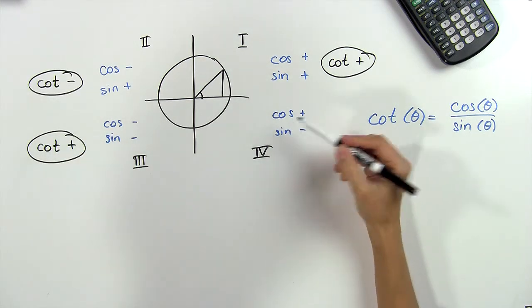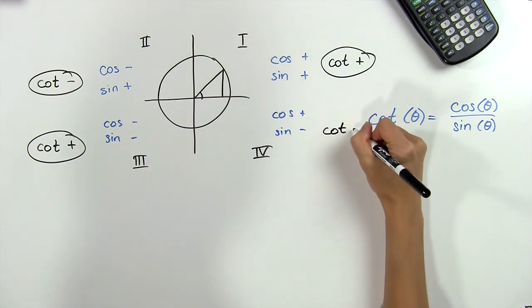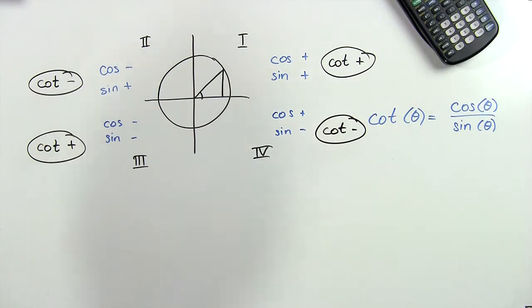And lastly, in the fourth quadrant, we have a positive over a negative, which gives us a negative. So we have a positive sign for cotangent in the first and third quadrants, and a negative sign for cotangent in the second and fourth quadrants. And that's how we find the sign of the cotangent. Thanks for watching.